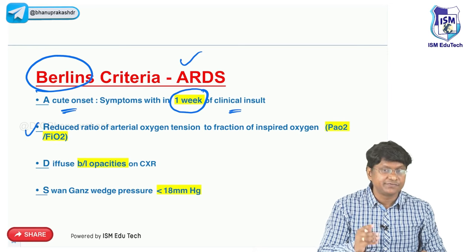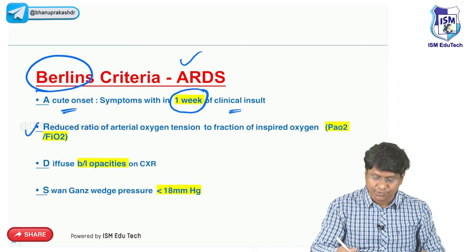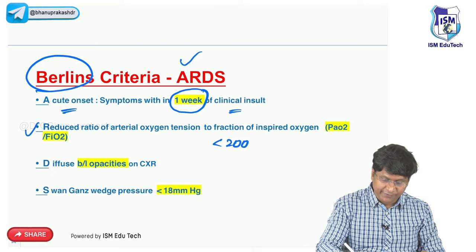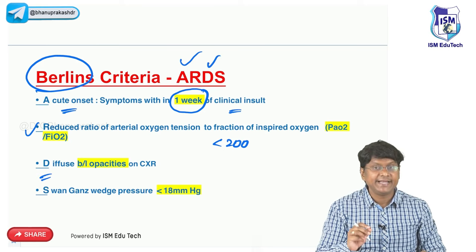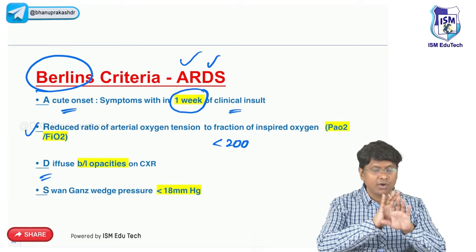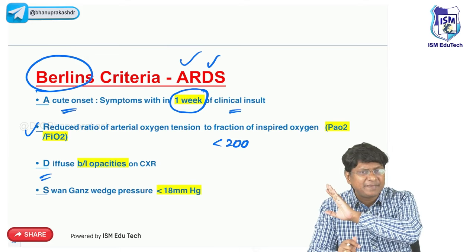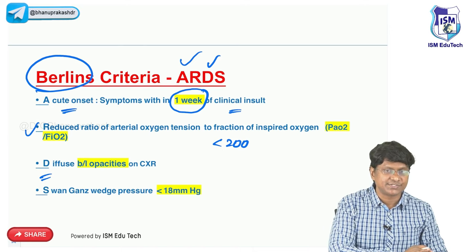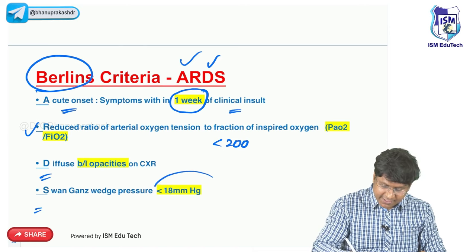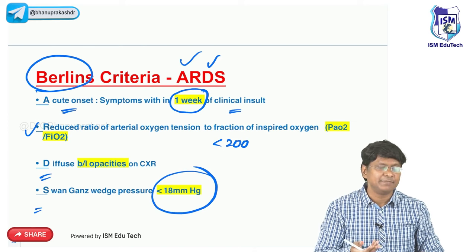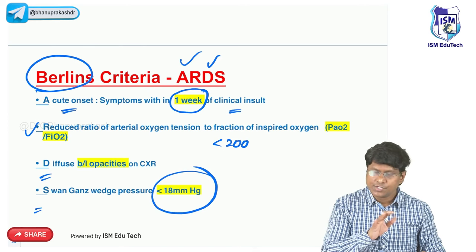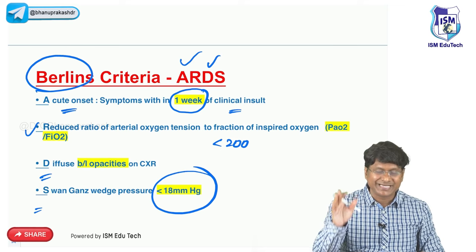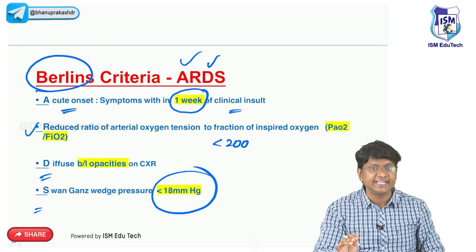R stands for reduced PaO2/FiO2, which should be less than 200. D stands for diffuse bilateral opacities on the chest X-ray - you will have a complete white-out lung. S stands for Swan-Ganz catheter showing pulmonary capillary wedge pressure of less than 18. Even though the normal range is 6 to 12, the cutoff we take is 18 mmHg.